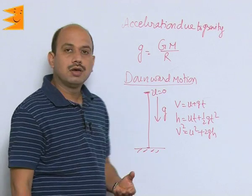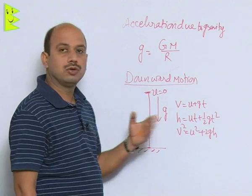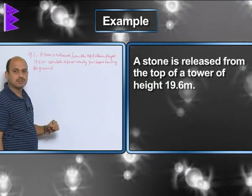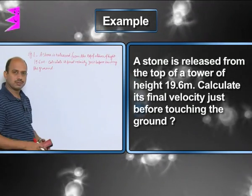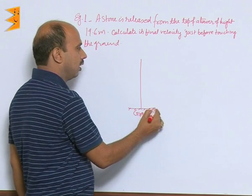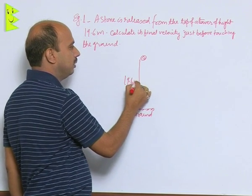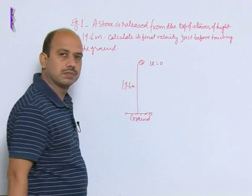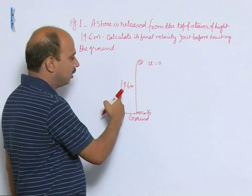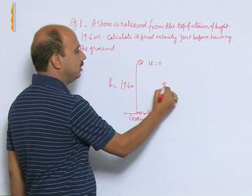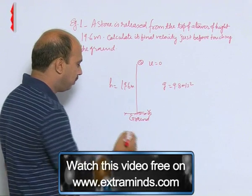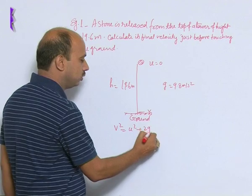Now we will do numericals related to these formulae and acceleration due to gravity. In this example, a stone is released from the top of a tower of height 19.6 m — calculate the final velocity just before touching the ground. A ball is dropped from here; this height is 19.6 m. When the ball is dropped, initial velocity u = 0. We need to find the final velocity. Given: u = 0, h = 19.6 m, g = 9.8 m/s². We apply v² = u² + 2gh because the body is coming downward.